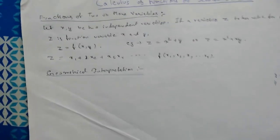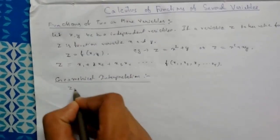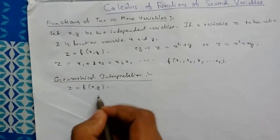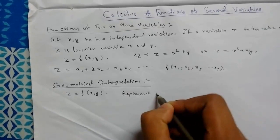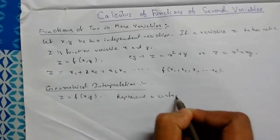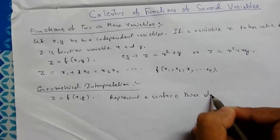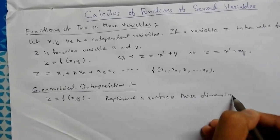But here in case of function of two variables, that is z equals f of x comma y, we see that the function represents a surface in three dimensional space.